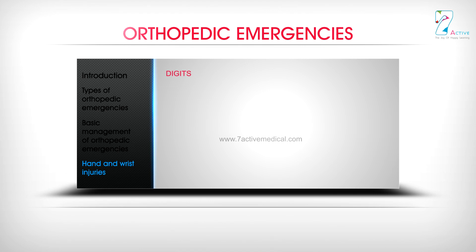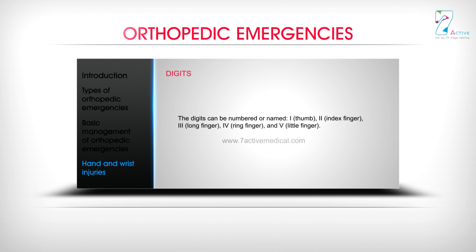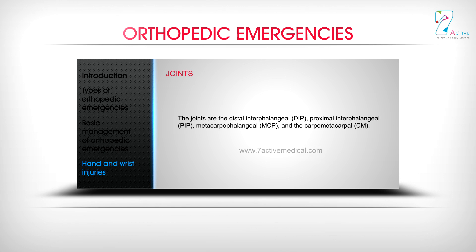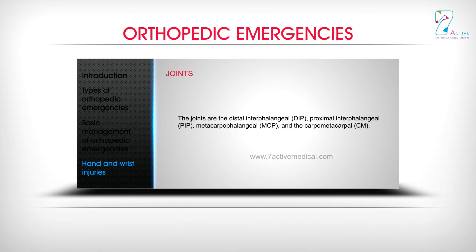Digits can be numbered or named: 1. Thumb, 2. Index finger, 3. Long finger, 4. Ring finger, 5. Little finger. Joints include the distal interphalangeal (DIP), proximal interphalangeal (PIP), metacarpophalangeal (MCP), and the carpometacarpal (CMC).